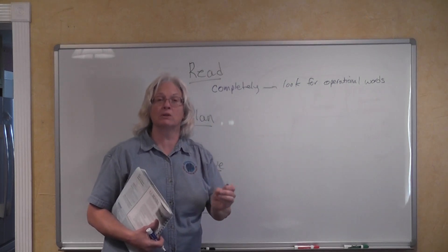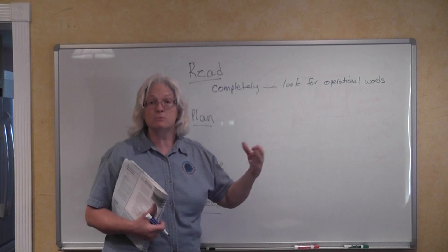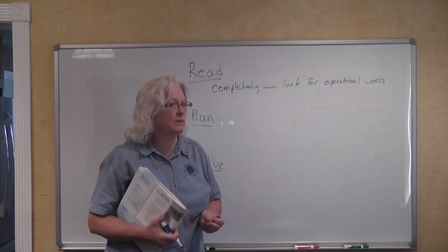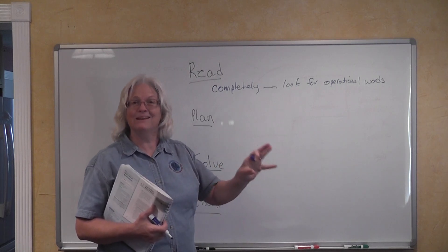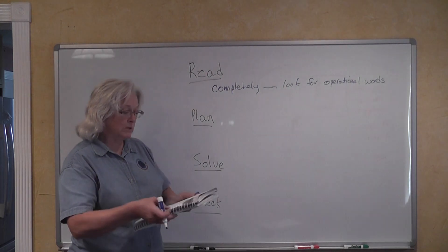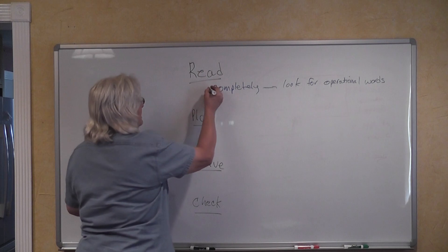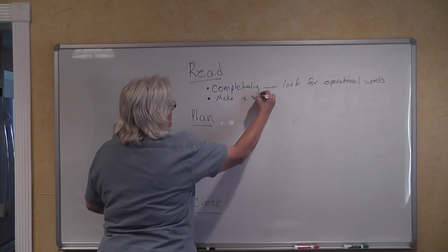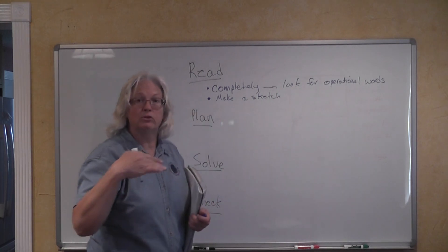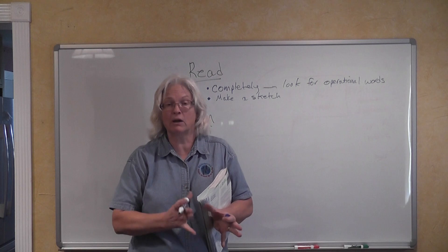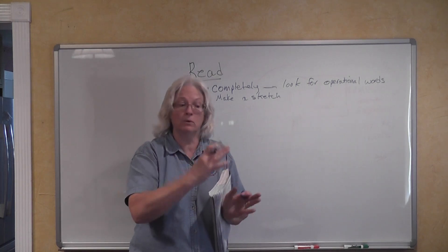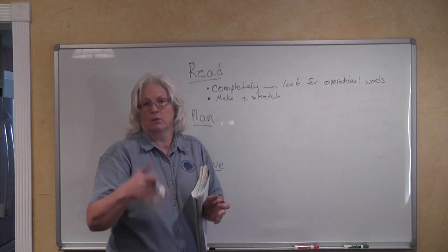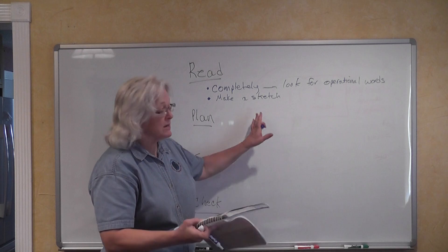Your word problem is going to tell you something like: Johnny's mother gave him six dollars. He added this to his bank account, which had $103. How much money did Johnny have altogether? They're not going to be quite that easy, but you have the operational word that indicated addition in that. If you're able to make a sketch or draw a picture — maybe you're being asked to determine how many feet of fencing you need to enclose a rectangular garden — it will help you immensely. Make a sketch if you can.